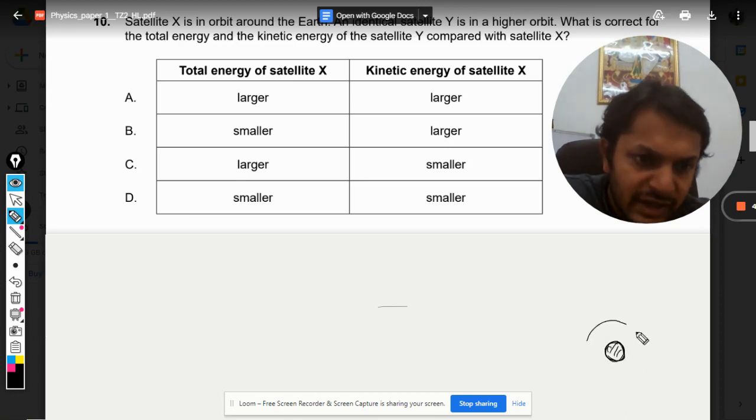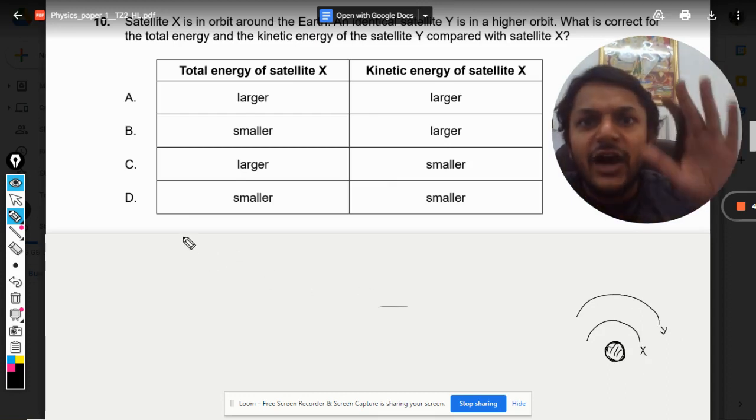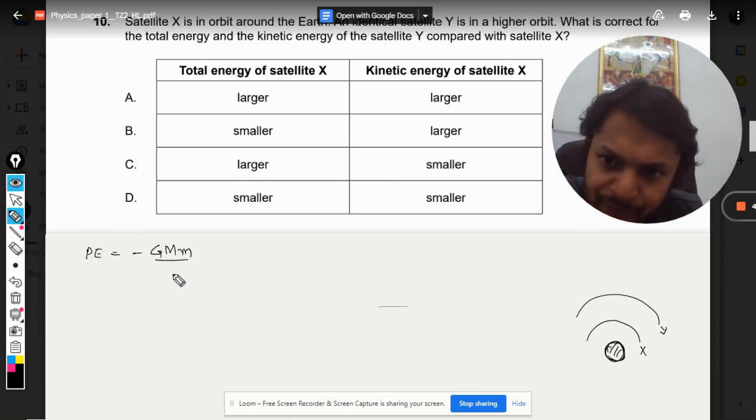It will be somewhere like this. So these are the two satellites, let us say this is Y and this is X, this is Earth. The question is about the energies. Let us write down all the formulas for the energies. For the potential energy, we know that the formula should be somewhat like this: minus GMm/r.